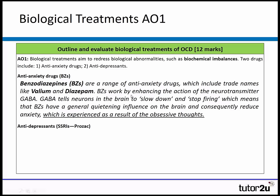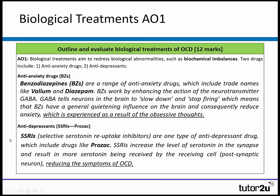Because the question is about biological treatments, one drug wouldn't be enough — we need to mention a second, and the second one is much easier. SSRIs are a range of antidepressants including drugs like Prozac. They work by increasing the level of serotonin in the synapse, so there's more serotonin received by the receiving cell, which reduces the depressive symptoms of OCD.